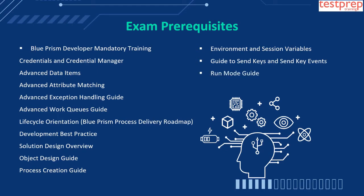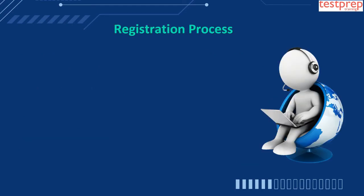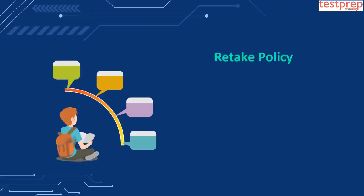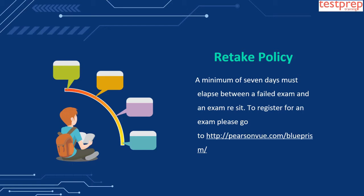Registration process: firstly go to the official Blue Prism portal and register there. Next, hover over the learning tab and click on certification. Below there will be important documents about the various certification exams available for download. To register for the exam, click on the link provided which takes you to Pearson VUE. Sign up on the Pearson VUE website, select your exam, and fill out the details along with paying the fee.